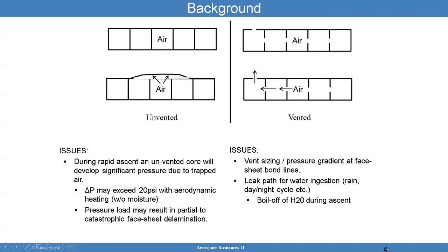During rapid ascent, an unvented core scenario will develop significant pressure due to trapped air. This delta P across the face sheet can increase and go beyond 20 psi. In a rocket situation, the air entrapped could be at room temperature, 14.7 psi. As you ascend, it's possible that the skin of the space launch vehicle will get hot, and that hot temperature will cause the air to heat up, which means the pressure will increase — because increasing air temperature also increases air pressure by the ideal gas law. As a consequence, that differential pressure can be even greater than expected.